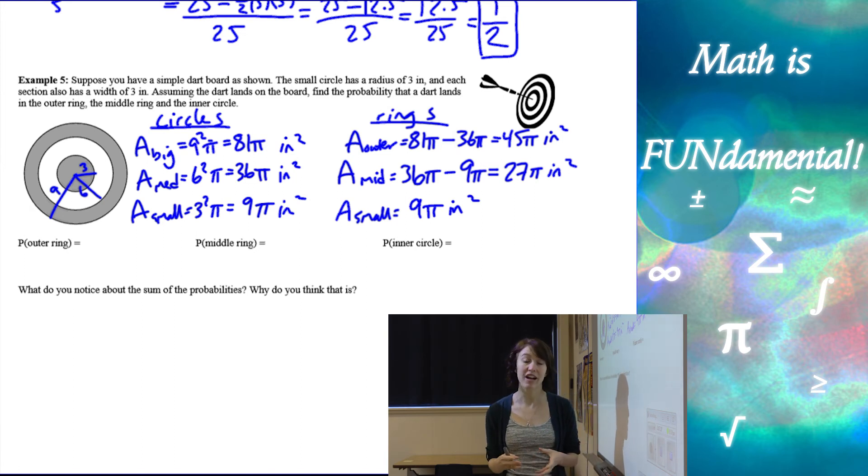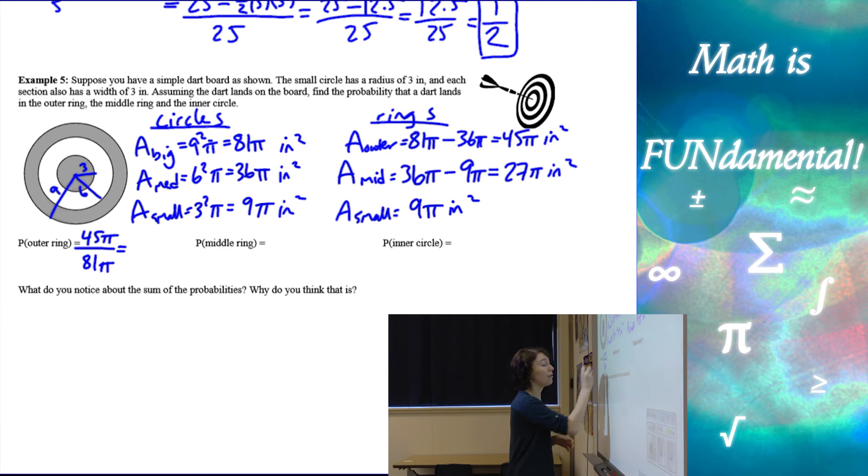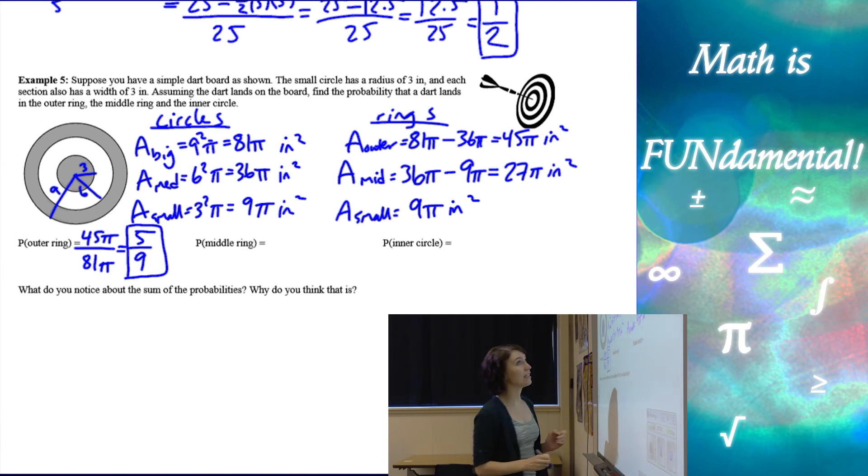Now that we have all of our areas, we can start finding our probability. So the probability of the outer ring is going to be the area of the outer ring, 45 pi, divided by the area of the entire board, which is the large circle, which was 81 pi. And we want to simplify that. We get 5 9ths.